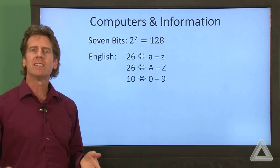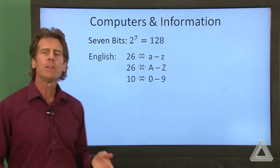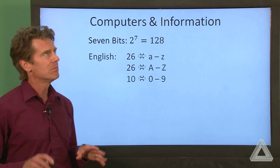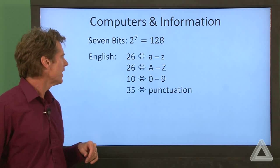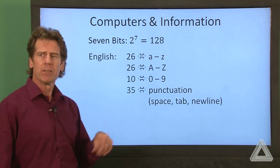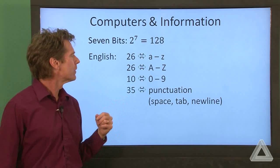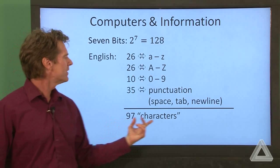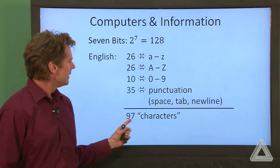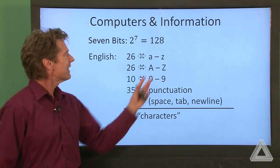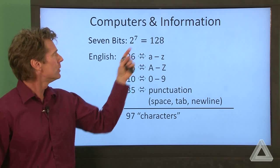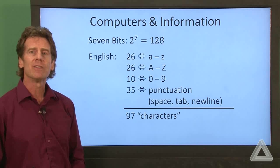But punctuation is also important when we're writing English. And if you look at your keyboard, you'll see that there are 32 punctuation marks in there. But there are some other punctuation marks, the space, the tab, the new line character, the return. So that's 35 characters there. And if we sum those all up, we get 97. So 97, well, that's less than 128. So we should be able to map all these things to different combinations of seven bits.